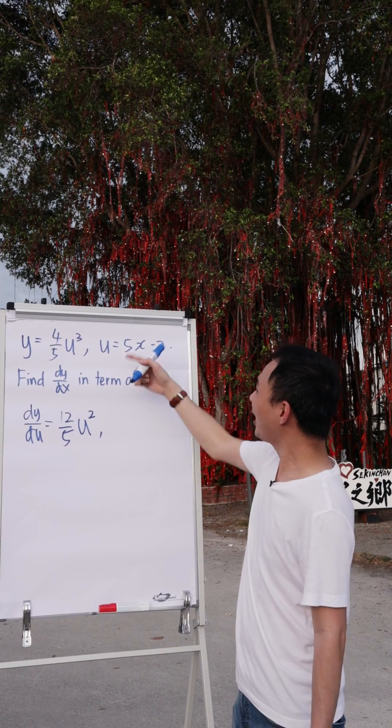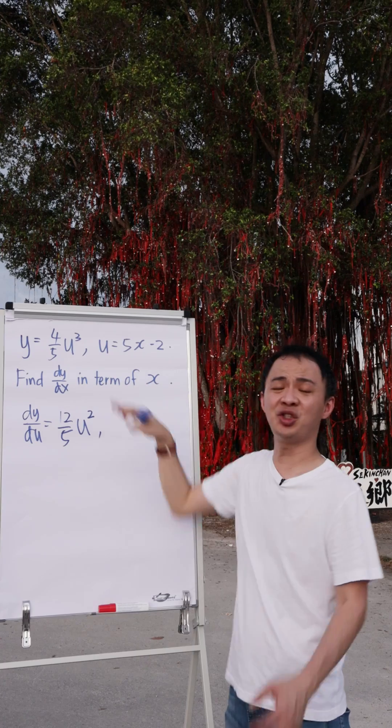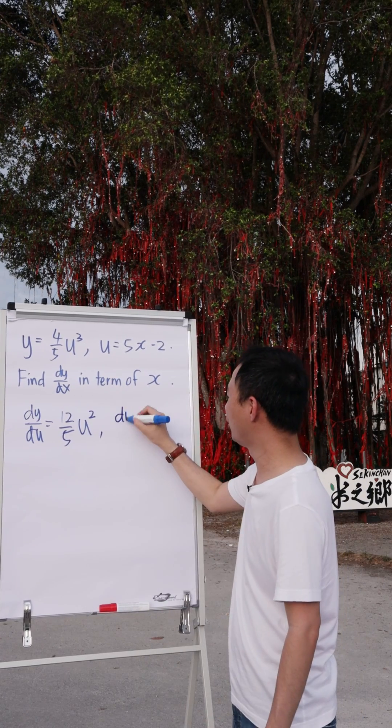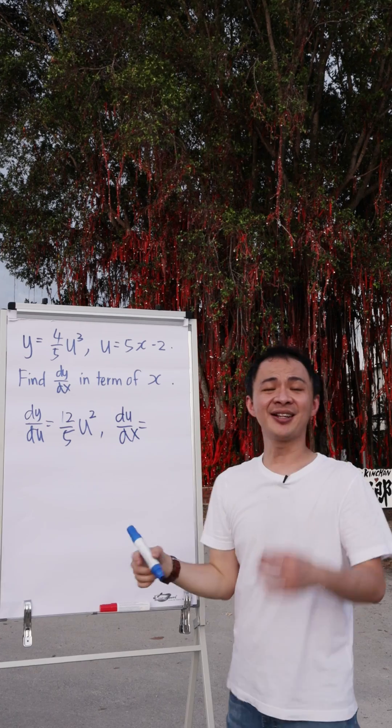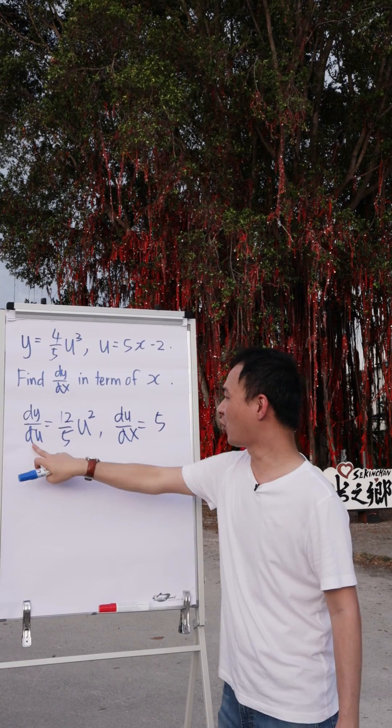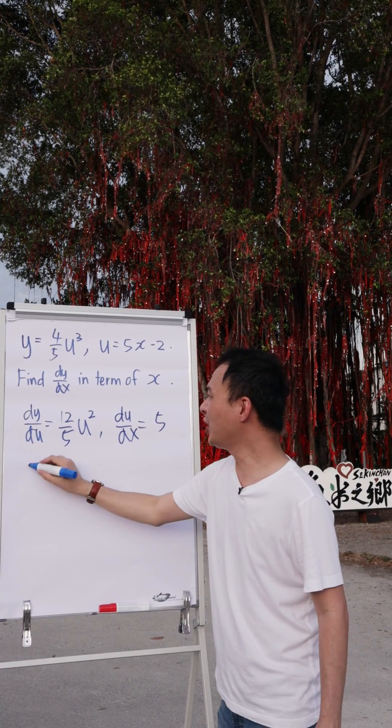And then what I want to do next is if I differentiate u in terms of x, this one we call du/dx. So if I differentiate 5x minus 2, I will just get 5.